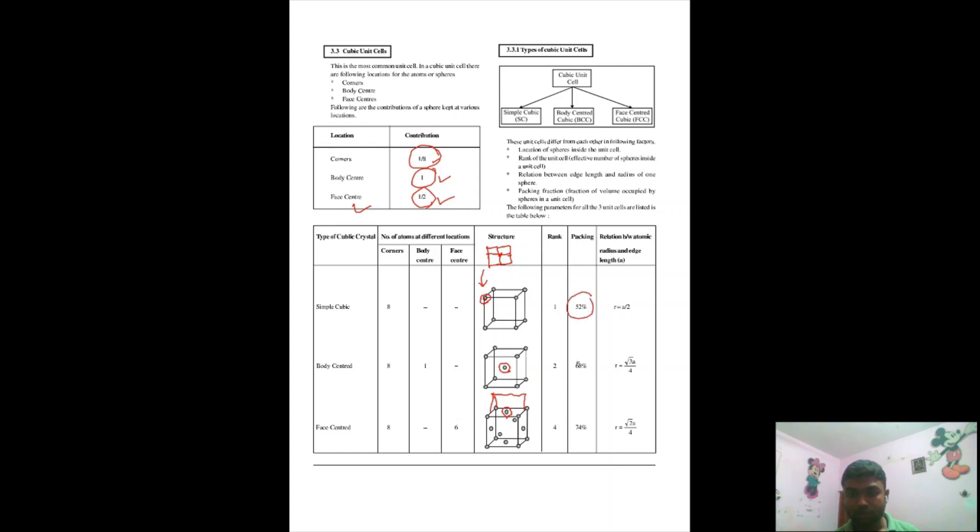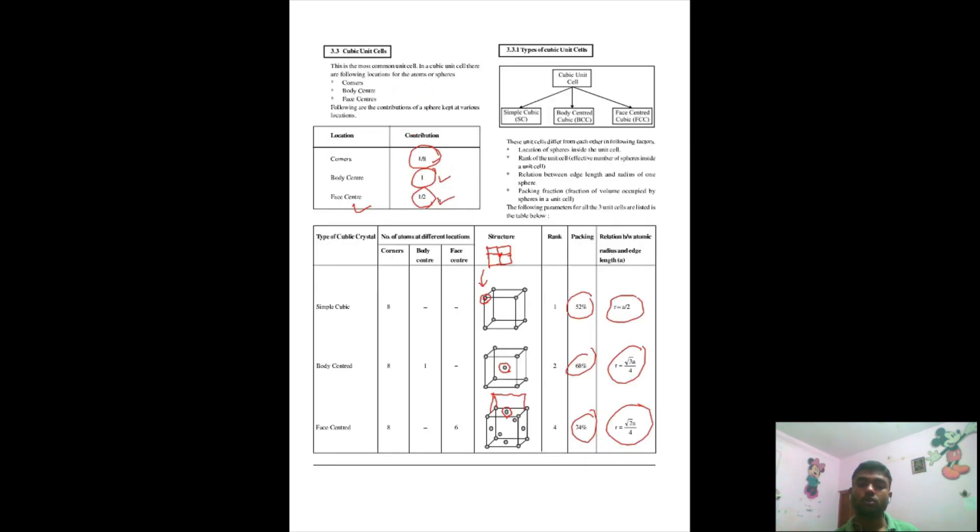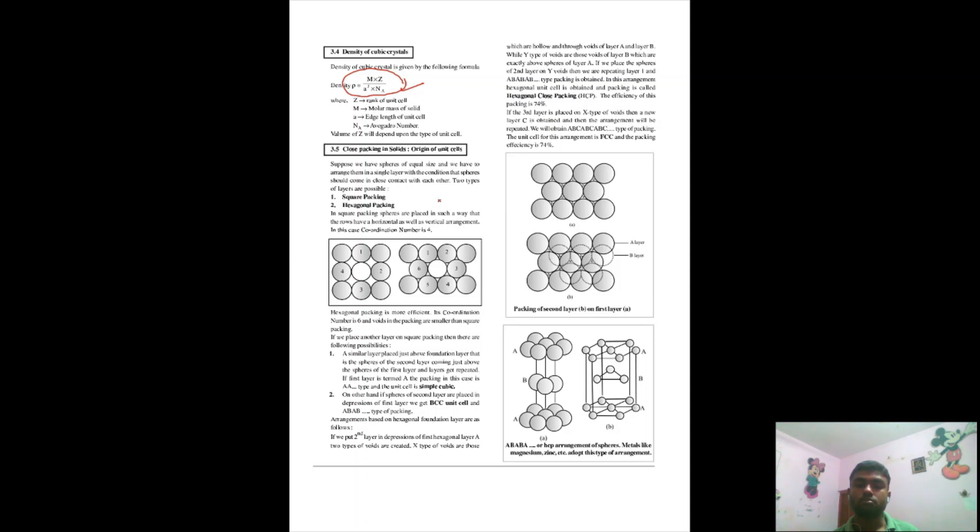After you understand all of these concepts, you need to remember their packing efficiencies because these are direct questions in competitive examinations and boards also. You need to remember the radius - these are very easy actually to remember. r equals a by two in simple cubic, root three a by four, root two a by four. These are very easy and important to memorize. Now coming into the density of the cubics and crystals, this formula is the most important formula, the only formula that we're going to be using from this chapter solid state. This formula is going to get used in almost all of the numericals. They will be using this formula to ask you questions using these criteria of contributions. Basically 90 percent of questions that you're going to see in previous questions are going to be related to this formula.